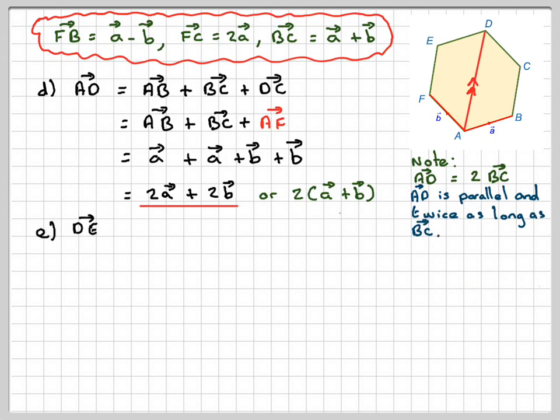DE, so DE is that vector there. And we can see that that is the same as AB, but in the opposite direction, so minus AB. So therefore that's going to be minus a.